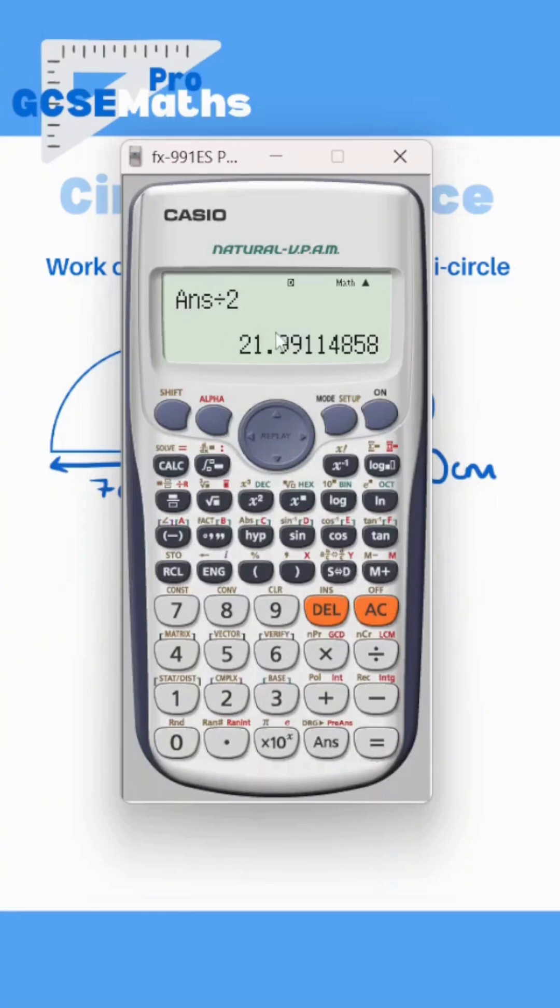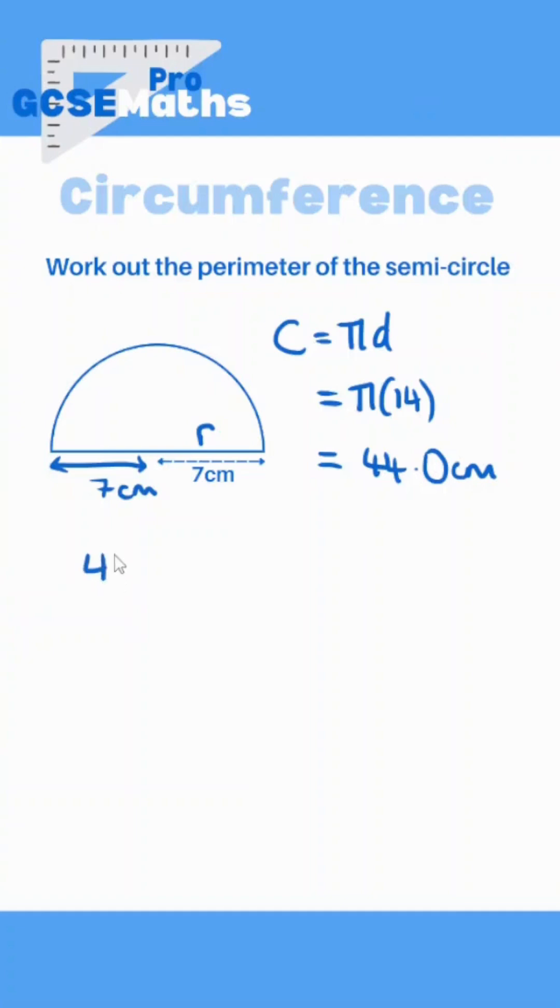Obviously 7π, but that gives me 21.99, which again rounding would be 21.0. So we've got 44 over 2, which is basically 22 centimeters for the arc.